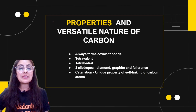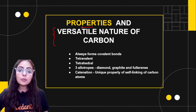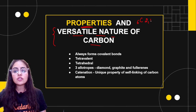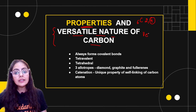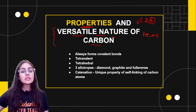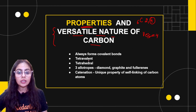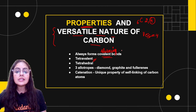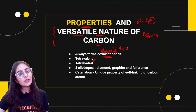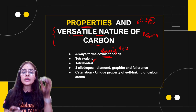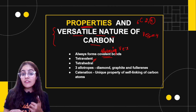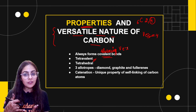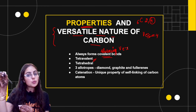Let's begin with simple properties of carbon and the versatile nature of carbon. Carbon's atomic number is 6, and its electronic configuration gives it 4 valence electrons — so it shows tetravalency. It always forms covalent bonds, which means mutual sharing of valence electrons. Carbon forms tetrahedral structures. The three allotropes of carbon you need to know are diamond, graphite, and fullerene. You can mention some properties and uses of diamond and graphite.